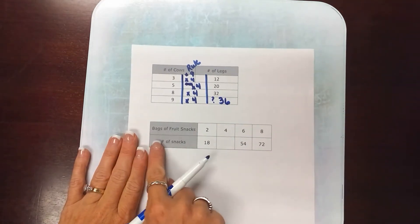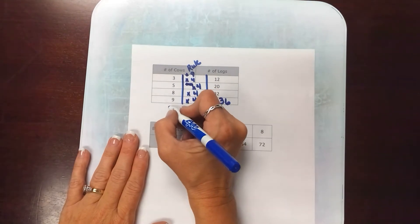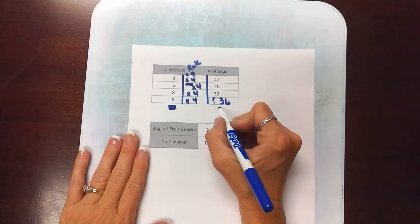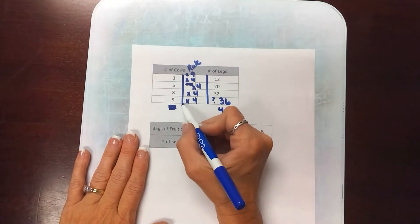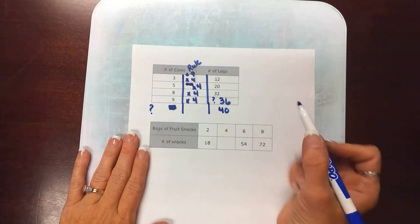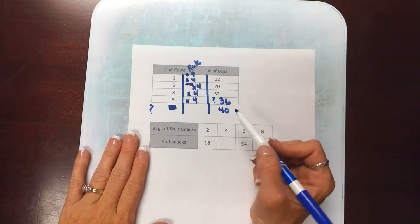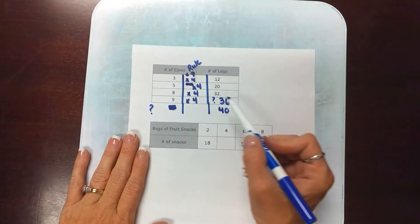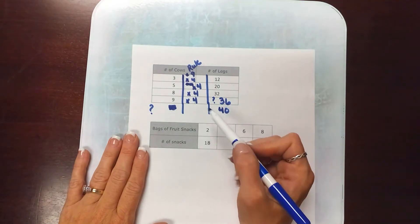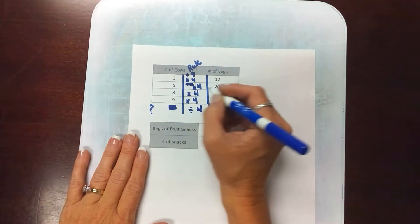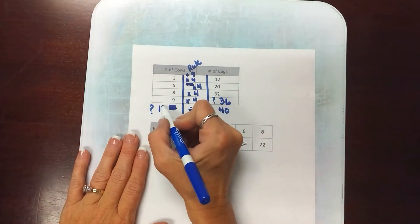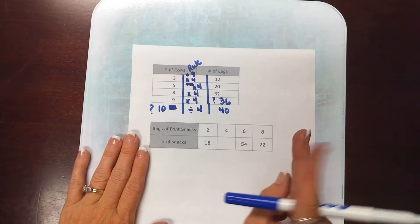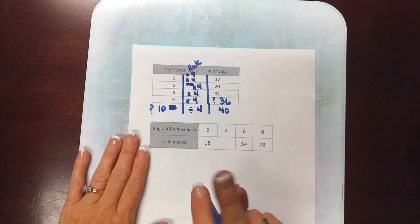That can also be done this way. Let's say that I had 40 here just for the sake of argument and I need to find the input. Students have to be able to go backwards in the table so they have to look and say well if 9 times 4 is 36 then 40 divided by 4 is going to give me my input of 10. They have to go from input to output and output to input and determine what that relationship is.